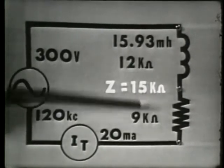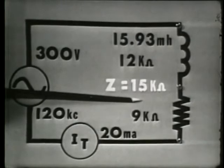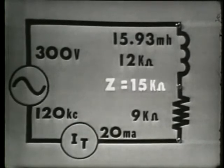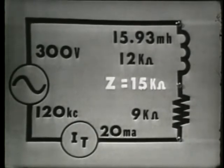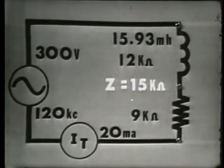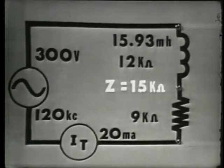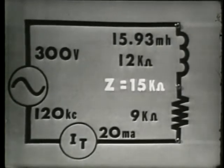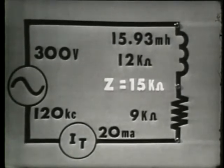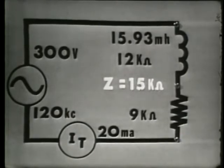Now, these voltages that we just determined with Ohm's Law cannot be added algebraically, because they are occurring at different times — they are out of phase with each other. Plotting these voltages as vectors will emphasize this point.